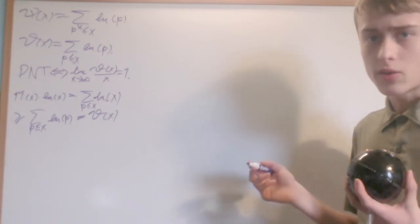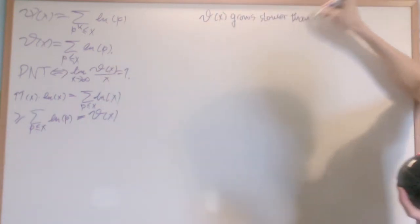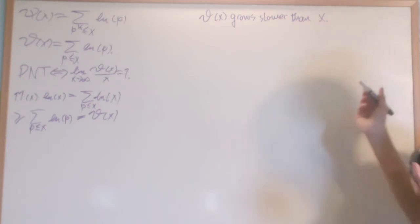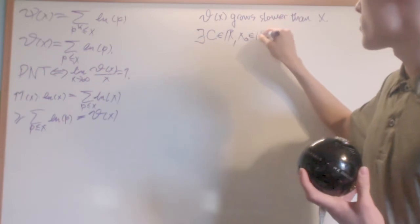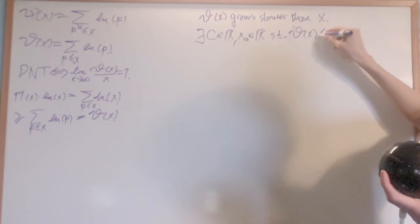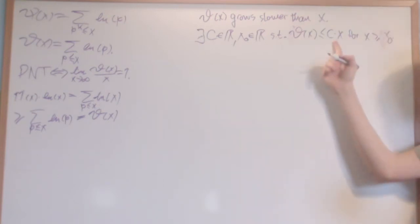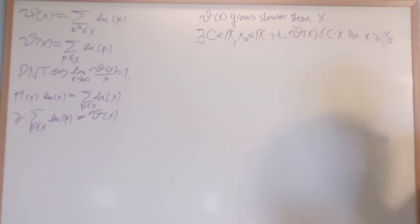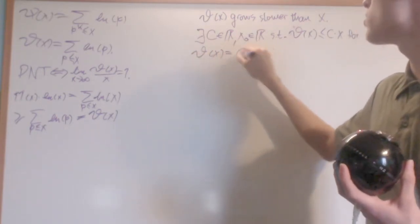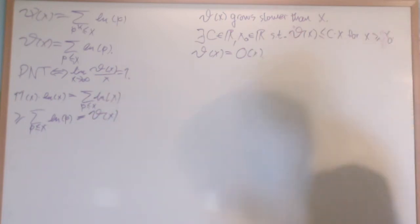The property I want to show in this video is that theta(x) grows slower than x. Formally, there exist constants c in R and x₀ in R such that theta(x) ≤ c*x for all x ≥ x₀. This is written as theta(x) = O(x), meaning theta(x) and x have a special relationship in growth rate. We'll use this as one step toward proving that lim(x→∞) theta(x)/x = 1.